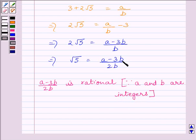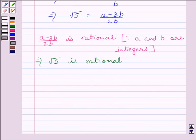We know A minus 3B upon 2B is equal to root 5. So, root 5 is also rational. But this contradicts the fact that root 5 is irrational.